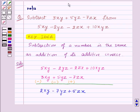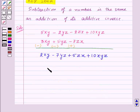Now, there is nothing to subtract from 10xyz, so we will write it as it is, that is plus 10xyz. So, we got our answer as 2xy minus 7yz plus 5zx plus 10xyz.